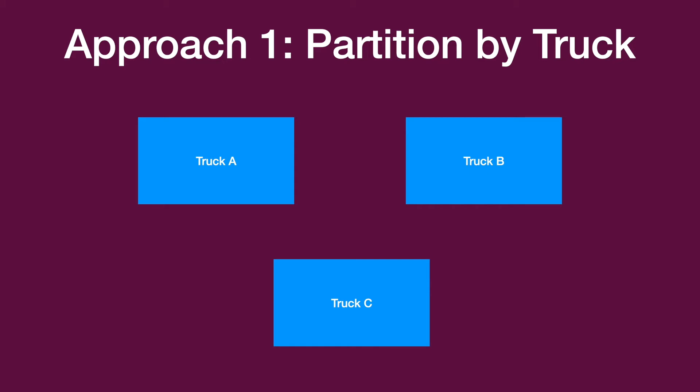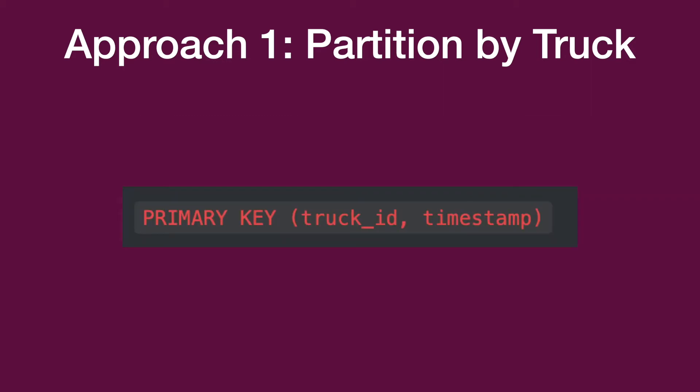The first approach is to partition your data by truck, so that truck A has all its data in one partition, truck B has all of its data in one partition, and truck C has all of its data in a third partition. If you have 20 trucks, you have 20 partitions, and each partition will contain all the data for that one truck.